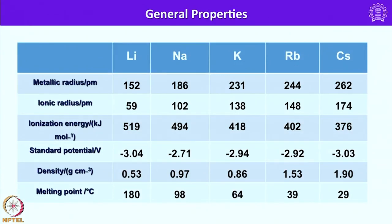Let us look into the general properties. I have listed here general properties for alkali metals. The metallic radius is steadily increasing as expected due to increase in size, and consequently ionic radius is also increasing, with lithium showing 59 picometers. Ionization energy is also decreasing in this order, because of increase in size, with the highest ionization energy shown by lithium. Standard reduction potential is also shown here and is more or less comparable for all alkali metals. Density also increases as we go down the group and melting point decreases as we go down the group, being highest for lithium and steadily decreasing for sodium and potassium.